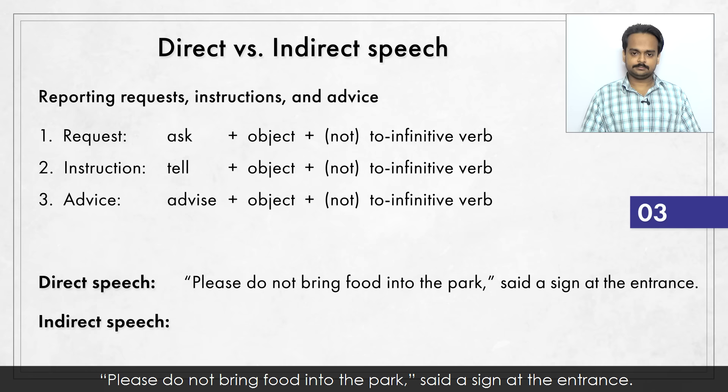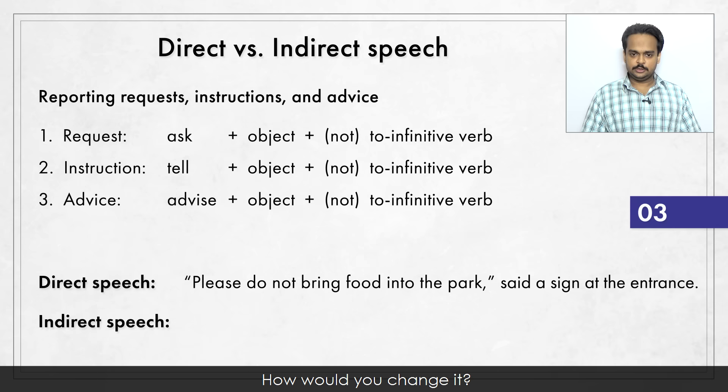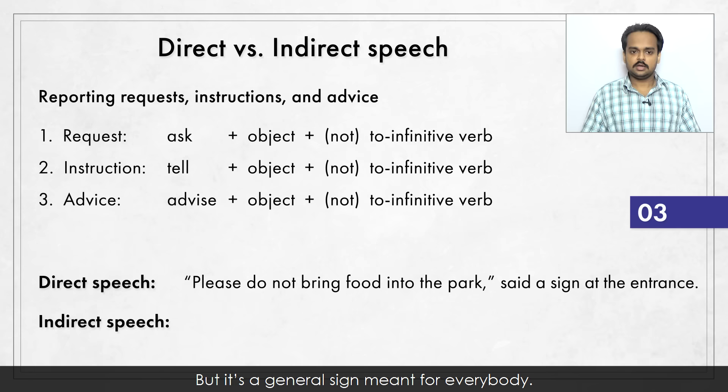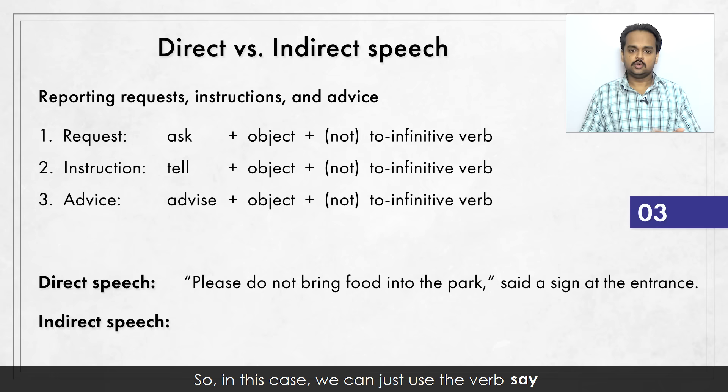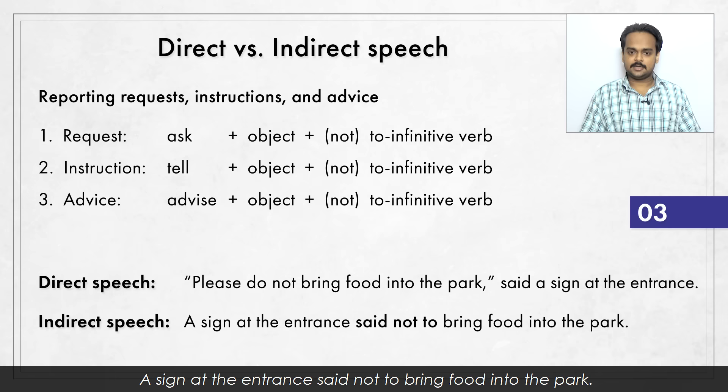Next one: "Please do not bring food into the park," said a sign at the entrance. This is an instruction, and we can say: a sign at the entrance told us not to bring food into the park. But it's a general sign meant for everybody, so in this case we can just use the verb "say": a sign at the entrance said not to bring food into the park. Because we're using the verb "say", there is no object – remember, "say" does not take an indirect object.